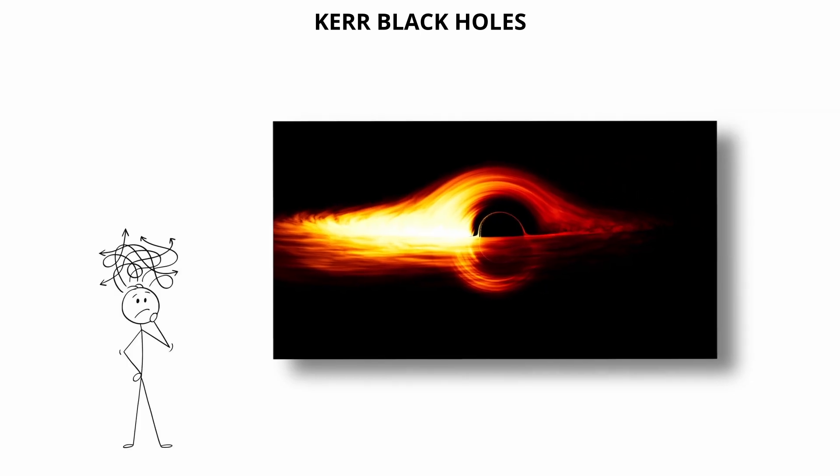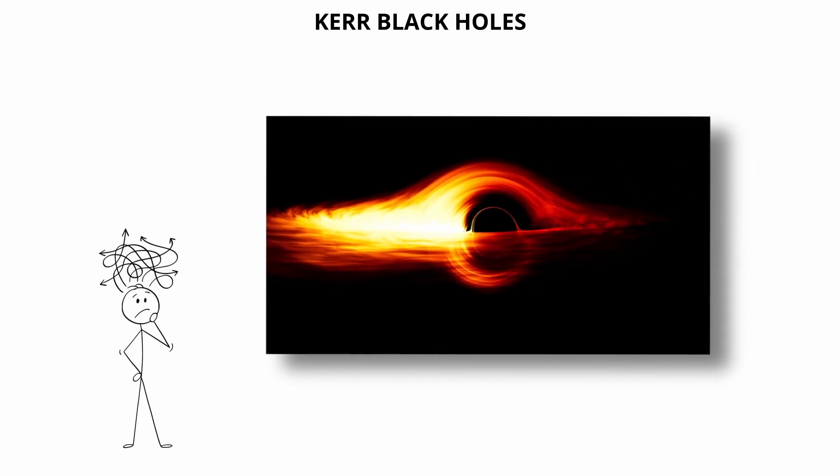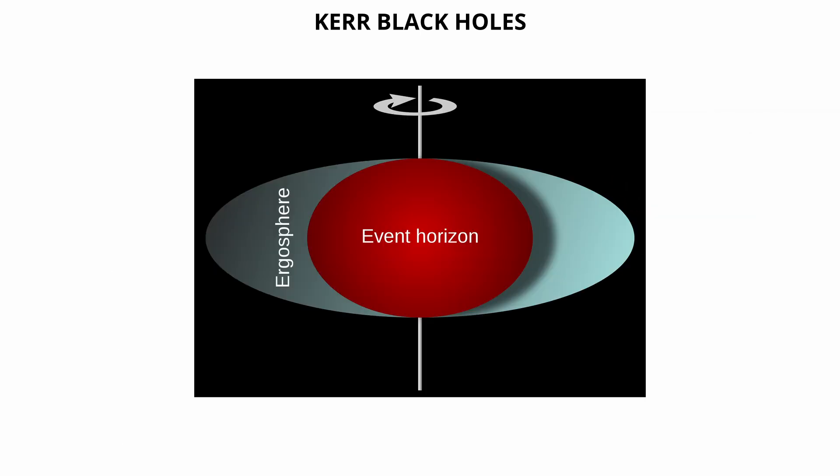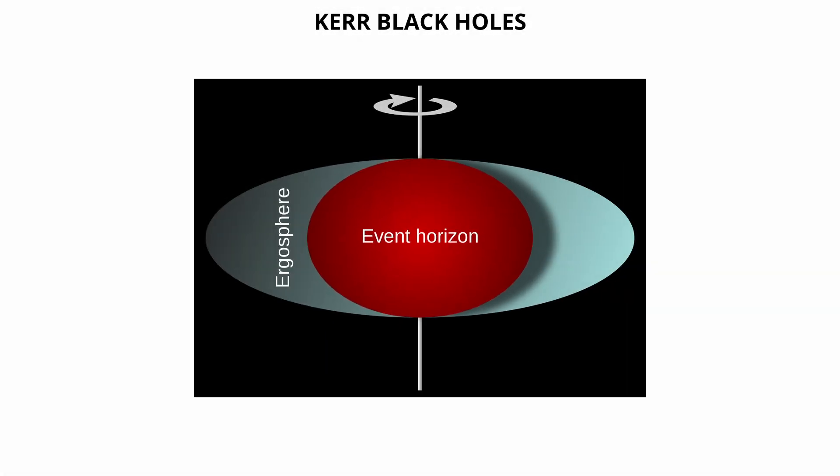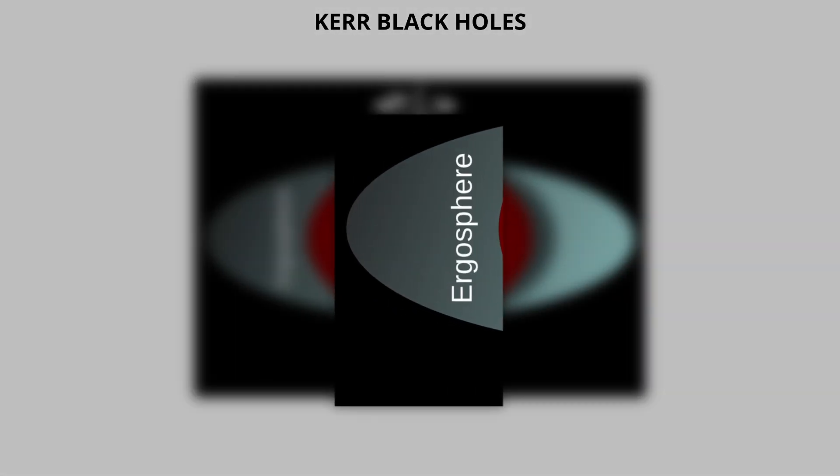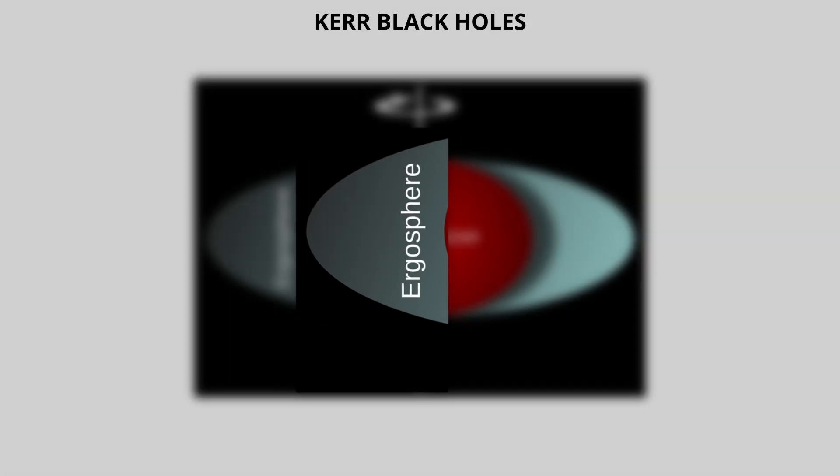The structure of a Kerr black hole is more complex than that of a non-rotating Schwarzschild black hole. It has two key surfaces: the event horizon, beyond which nothing can escape, and the ergosphere, a region outside the event horizon where spacetime is dragged faster than the speed of light relative to distant observers.